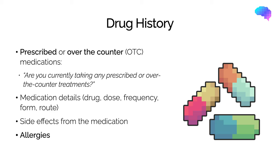When considering drug history, you should ask if the patient is taking any prescribed or over-the-counter medicines, including dose, frequency, form, and route. It's also worth asking about side effects — for example, a dry cough is a very common side effect of ACE inhibitors, used in the management of high blood pressure. You should also ask about allergies and clarify the type of reaction, distinguishing a mild rash from a full-blown anaphylaxis reaction.